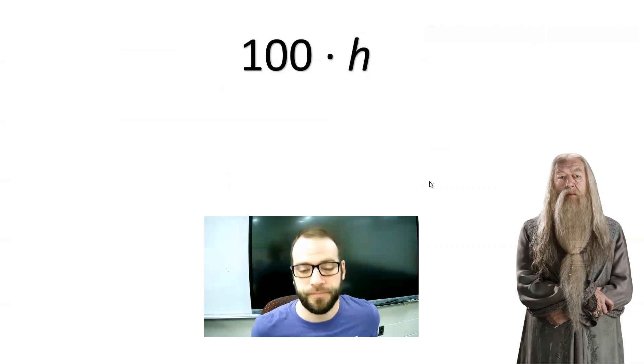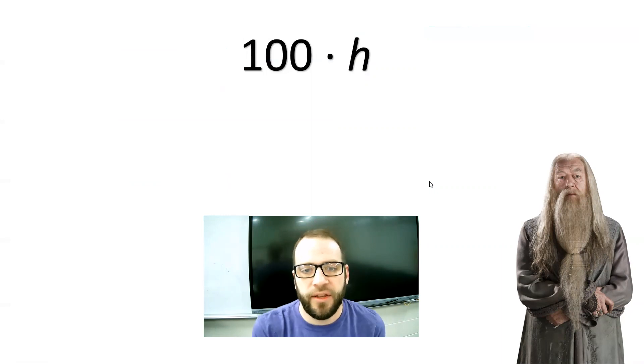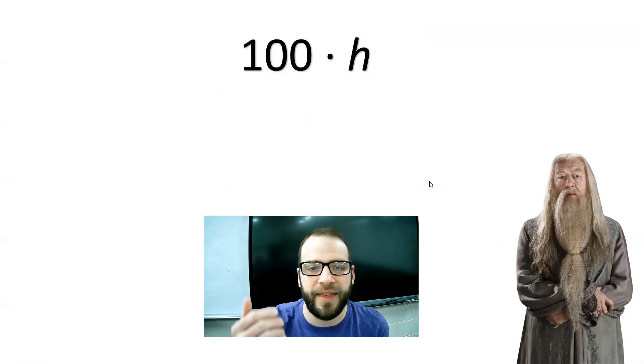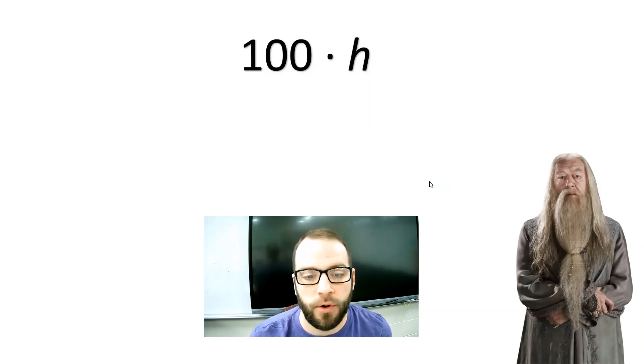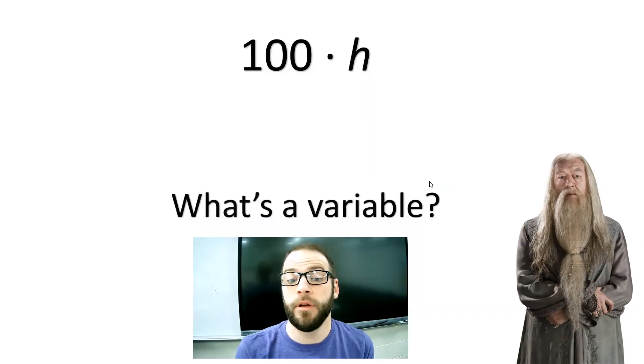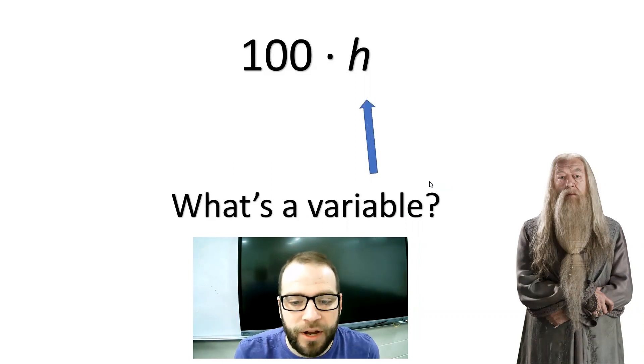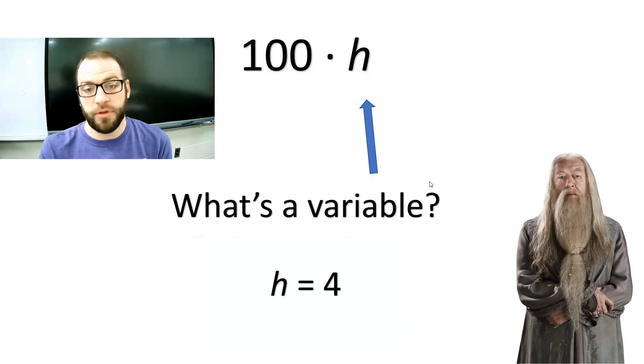We have 100 times H. What's your answer? What's your answer? What is it? What's 100 times H? Someone just said 100 H's. That's smart. The real answer is, you cannot simplify that. Why? Because we don't know what H is. It's a variable. It's an unknown amount. So, variables are unknown amounts. There's nothing wrong with that. Okay? What's a variable? It's an unknown amount. Like H. Right? That's a variable.